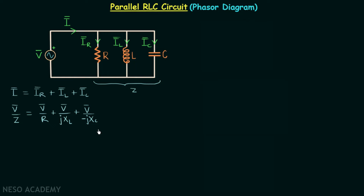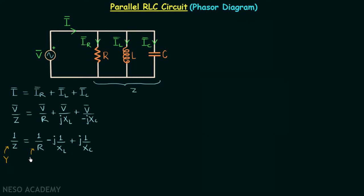In the next step we take out V phasor common from these three terms and cancel it out. This gives us 1 over Z equal to 1 over R. We can write 1 over jXL as negative j times 1 over XL, and 1 over negative jXC as positive j times 1 over XC. We know that 1 over Z is the admittance, 1 over R is the conductance, 1 over XL is the inductive susceptance, and 1 over XC is the capacitive susceptance.